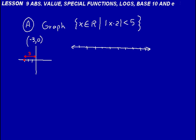So what we're doing is we're going to find all the values of x that are real numbers such that any of those substituted in for the absolute value of x minus 2 will give us a distance less than 5. If we think about absolute value as a distance, what values would be less than 5?